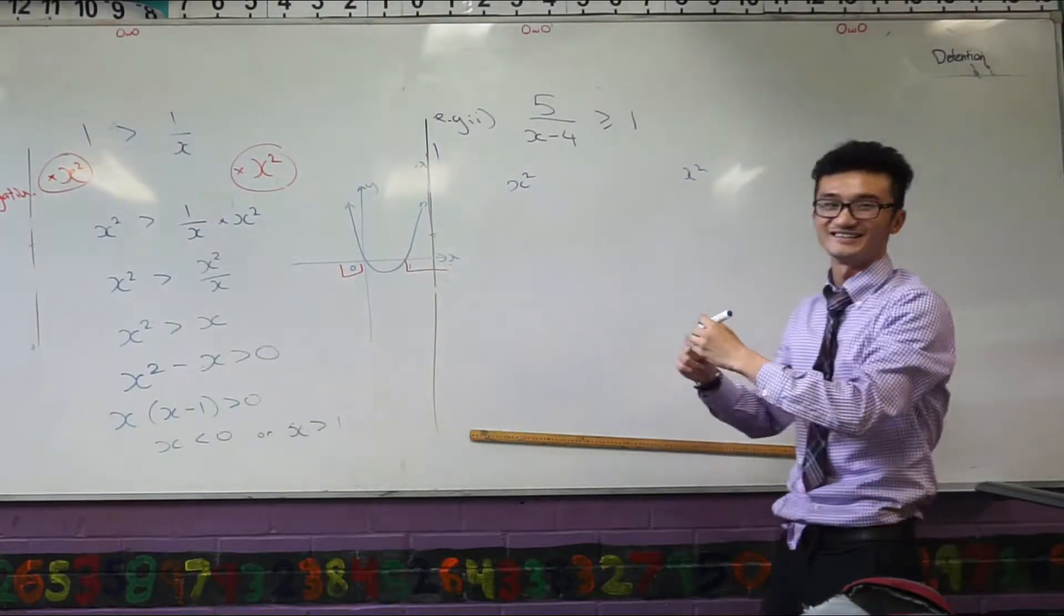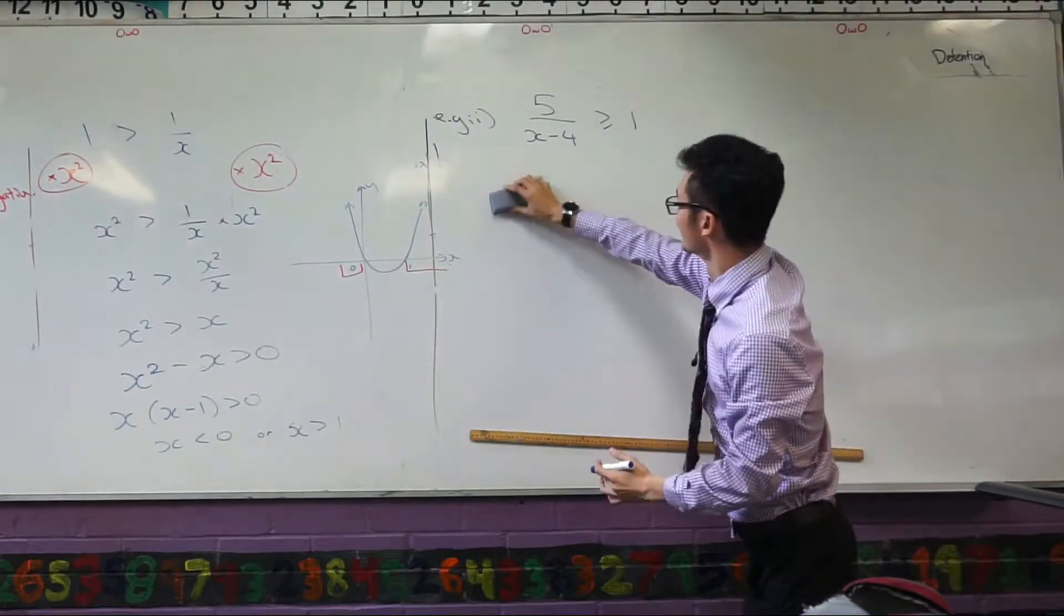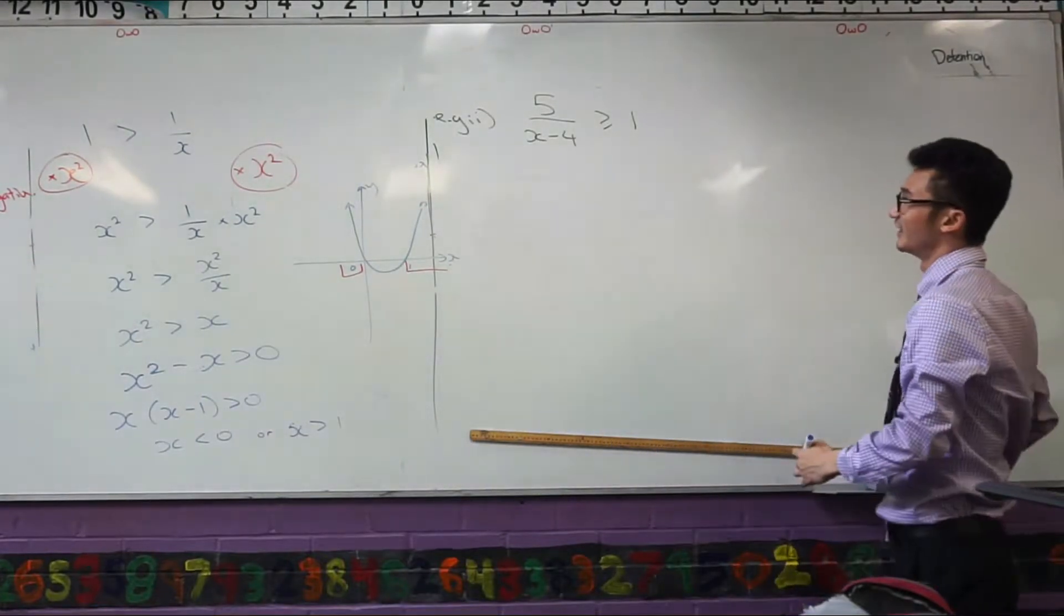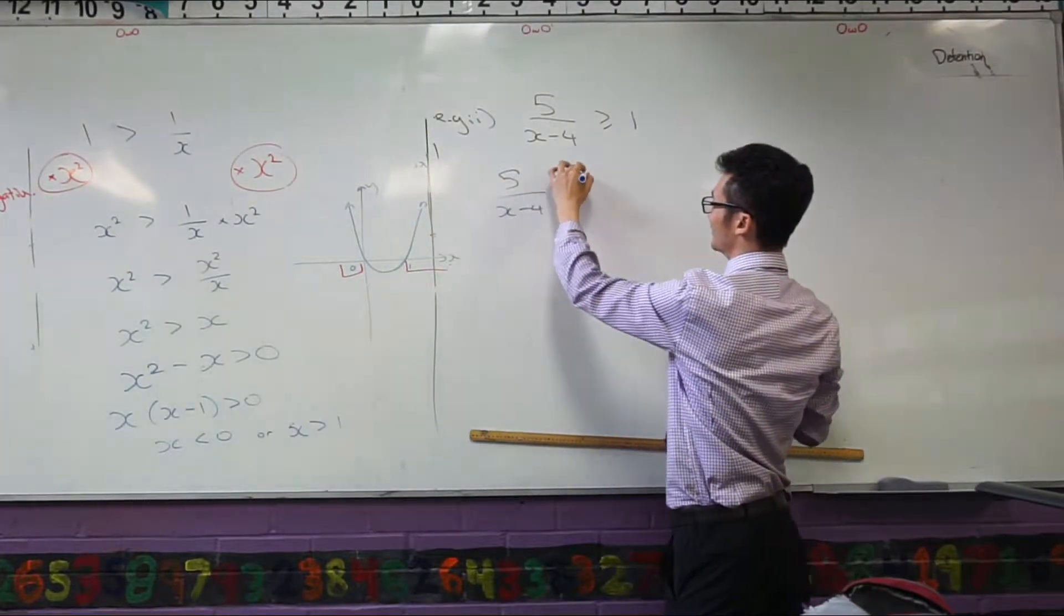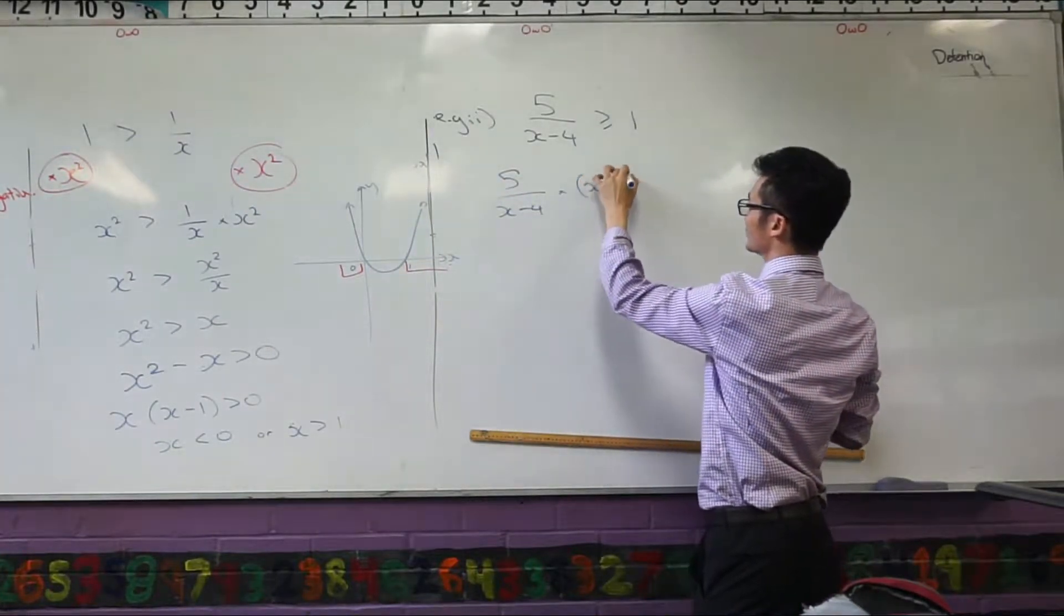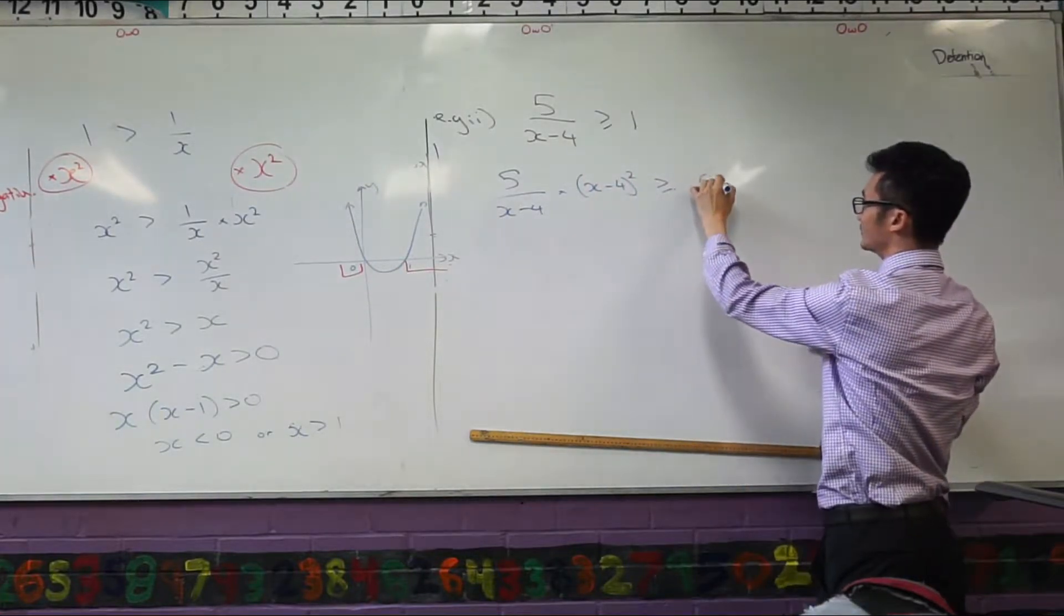No. So I have to multiply by the whole denominator squared, right? Which in this case the whole denominator is x minus 4. So 5 over x minus 4 multiplied by (x minus 4) all squared. So that's to both sides. This side would just be (x minus 4) all squared.